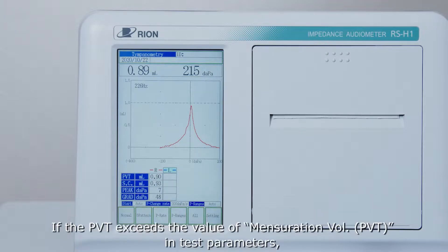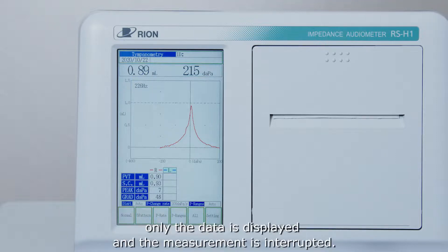If the PVT exceeds the value of mensuration volume in test parameters, only the data is displayed and the measurement is interrupted.